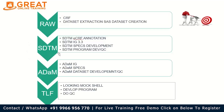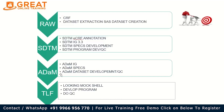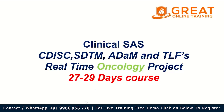I'll teach everything — SDTM, ADAM, and TFL — so you get more job calls. If you work in only one area, you get limited calls; if you work end-to-end across all areas, you get more calls. I'll also show you how the raw data extraction happens. Depending on what the client needs — full end-to-end, only TFL, or ADAM and TFL — the client provides the appropriate source data and you work on the required stages.